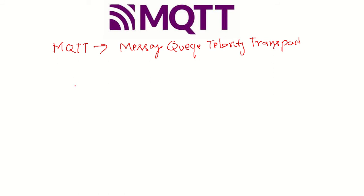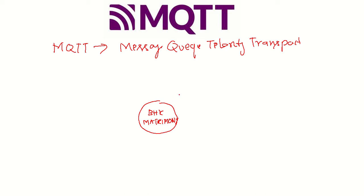To explain this, I am going to take an example of a simple marriage broker. I am going to think of a website called BHK Matrimony — just for an example. BHK Matrimony acts as a broker, a marriage broker.